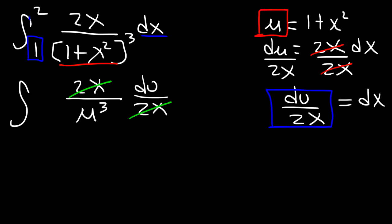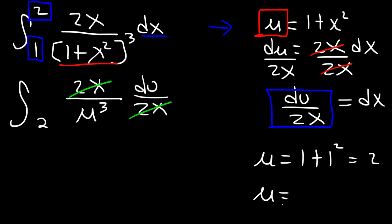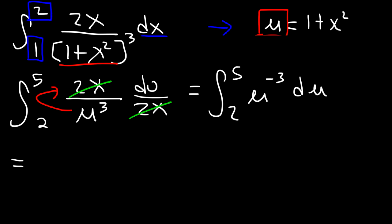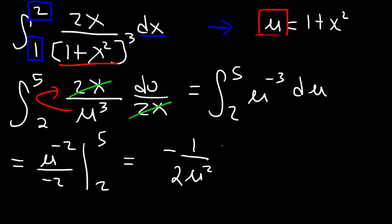We also need to change the limits of integration. When x is 1: 1 plus 1 squared equals 2. When x is 2: 1 plus 2 squared equals 1 plus 4, which is 5. So we integrate u to the negative 3 from 2 to 5. The antiderivative is u to the negative 2 divided by negative 2, which we rewrite as negative 1 over 2u squared, evaluated from 2 to 5.